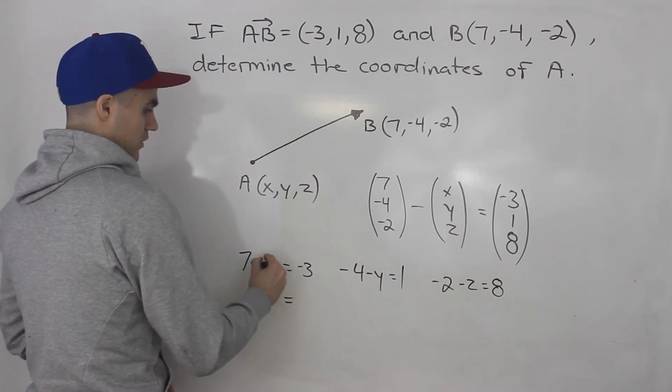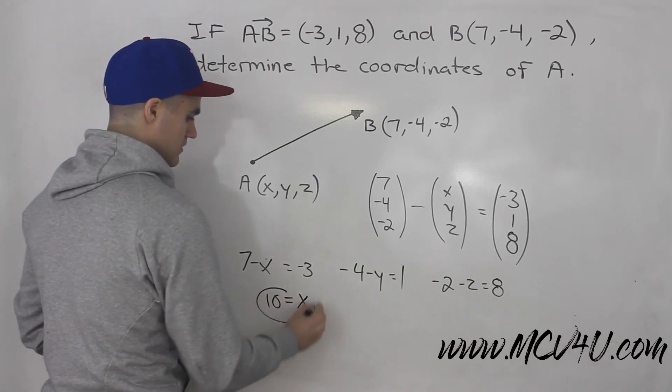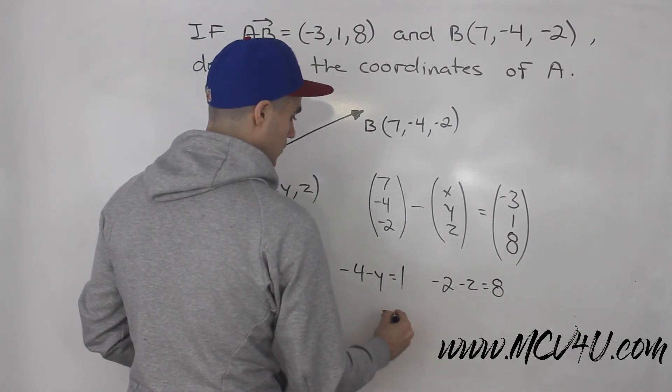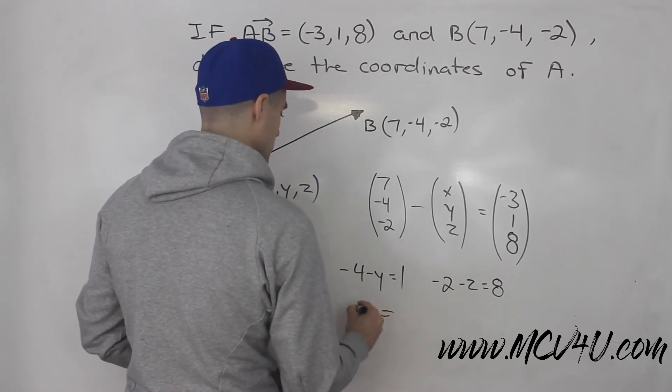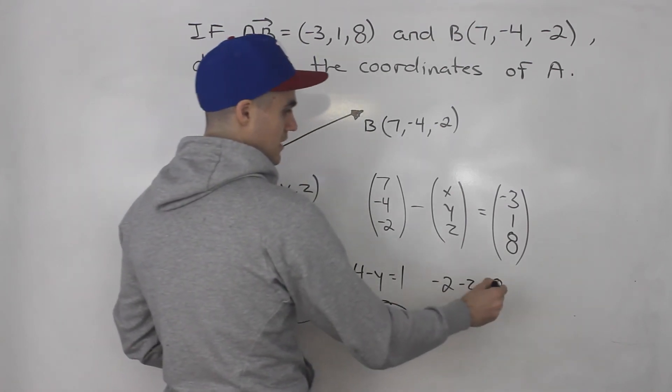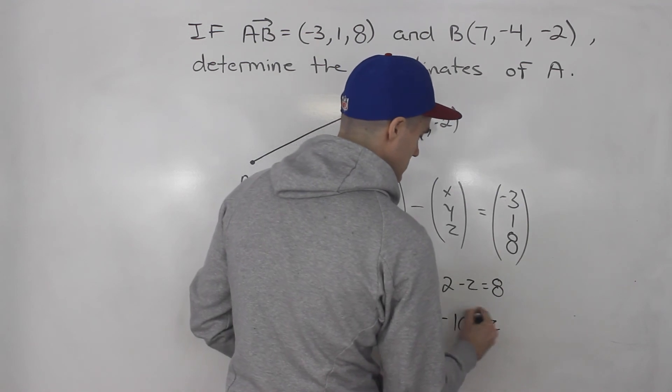So bring this over, bring this over, so x is 10. Bring the y over, bring the one over, so y is -4 minus 1, so -5 is y. And then bring the z over, bring the eight over, so -10 is equal to z.